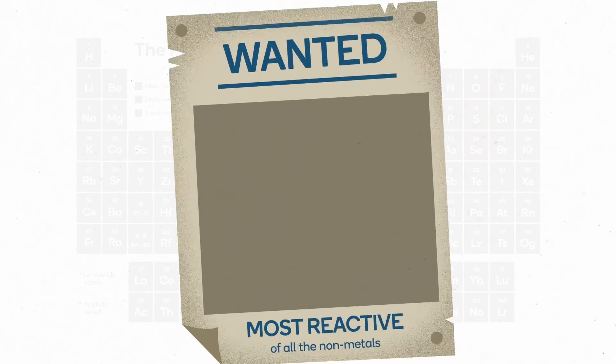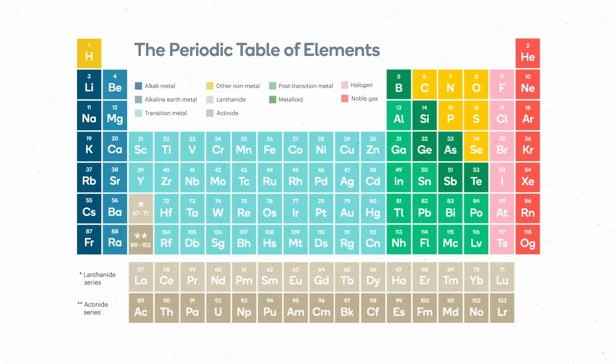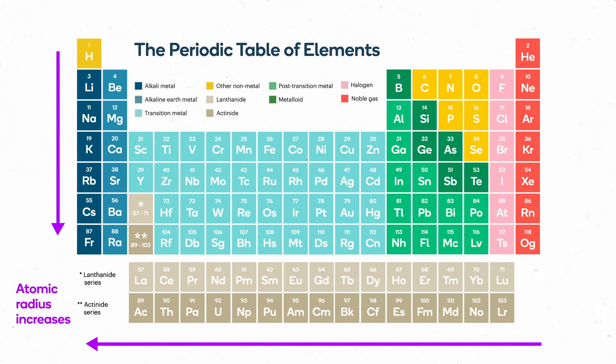The combination of these two trends makes fluorine super reactive. To sum up the trends in the periodic table that explain reactivity, atomic radius increases down each group and to the left across each period.